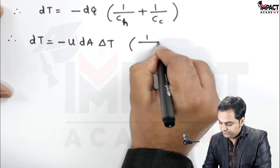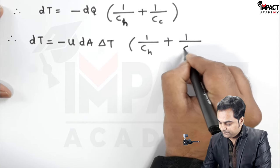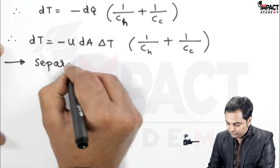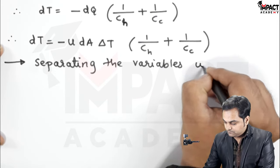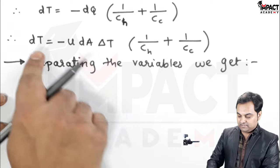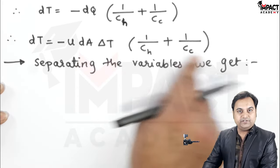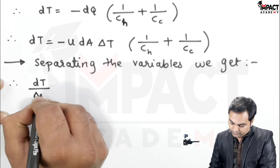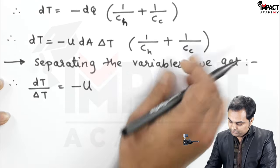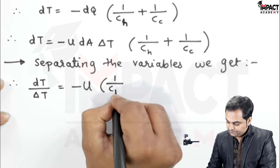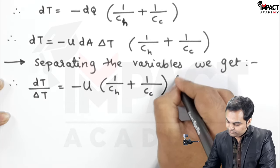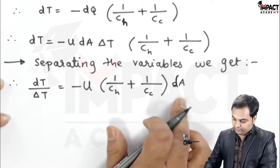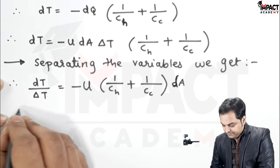Separating the variables — temperature and area — since U, CH, and CC are constant values: dT upon delta T equals minus U into (1 upon CH plus 1 upon CC) into DA. Now integrating on both sides.